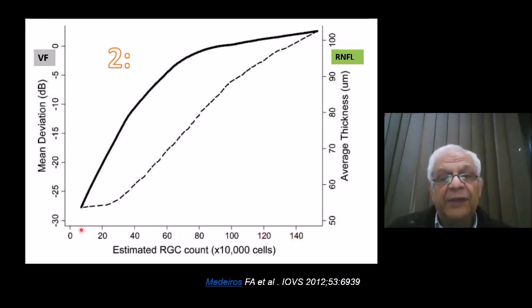In this graph here you can see the retinal pigment cell estimate number from high to low. On this y-axis this is the thickness of the retinal fiber layer, and here this is the mean deviation of the visual field.